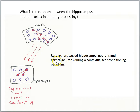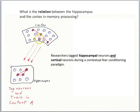They tagged the hippocampal neurons and the cortical neurons during a contextual fear conditioning paradigm. By tagging, we mean using the optogenetic technique so that cells activated by the contextual fear learning paradigm — both in the hippocampus and the cortex — triggered certain gene expression, and then light-sensitive proteins got inserted into the membranes, making these cells controllable with light. We are essentially labeling the future engram cells for a fear memory.